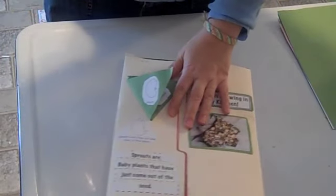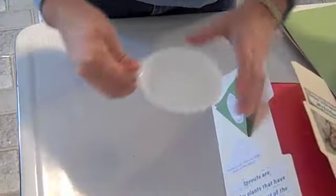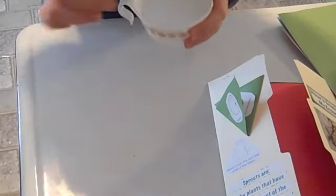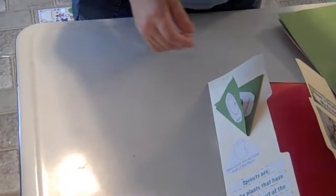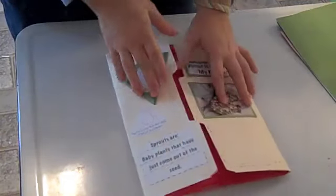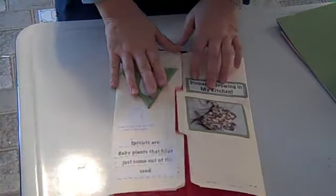So before you start the sprout book, what you should do is take some water and throw two or three kidney beans in the water and just let them sit while you do the book and I'll show you what to do after that.